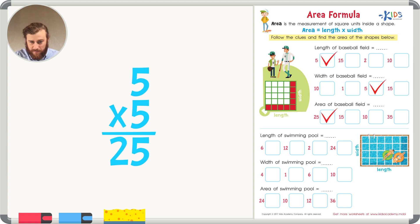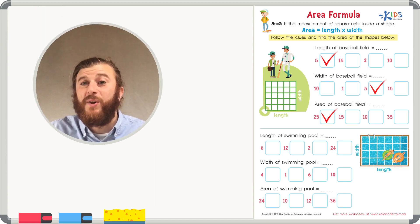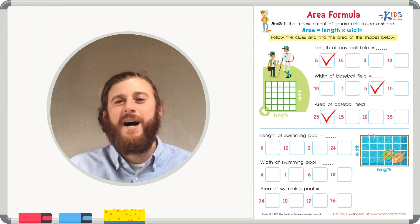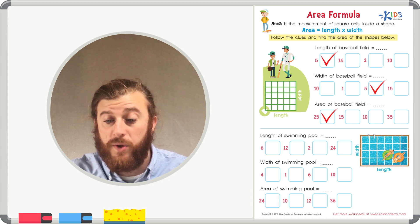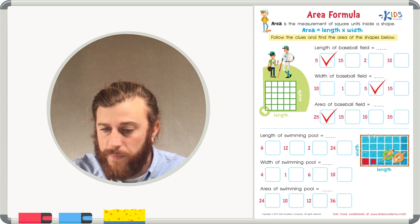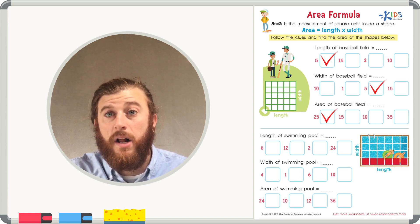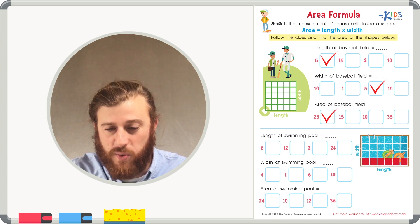Let's look at the second problem. Let's look at the clues. The length of the swimming pool equals... Let's count the boxes on the bottom to find out how long the swimming pool is. One, two, three, four, five, six. The length of the swimming pool is six squares.